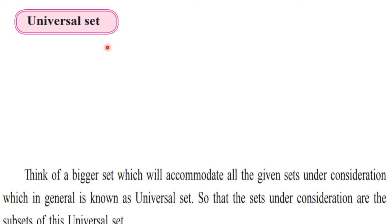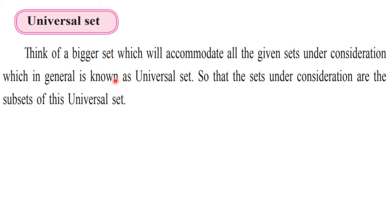Universal set. Here, we have to think of a bigger set that can accommodate many sets under consideration — that set is called a universal set. For example, books in the library is a universal set, and then you can have various subsets like books of drama, books of stories, books of poems and so on. That bigger set is called a universal set.